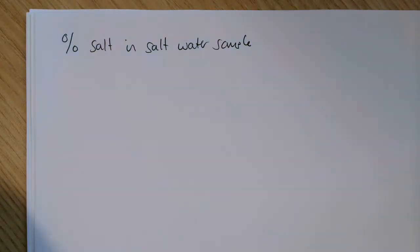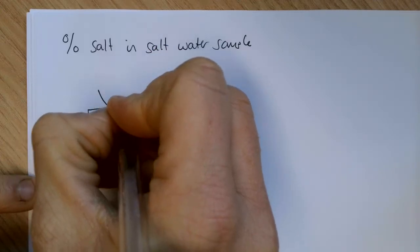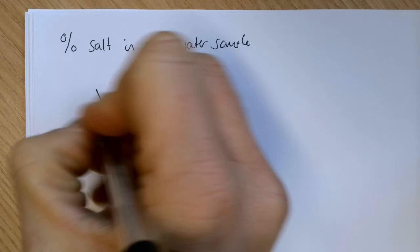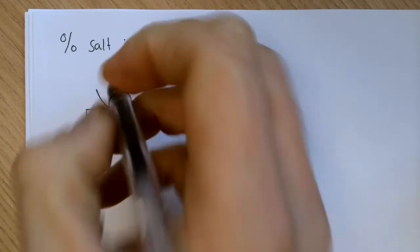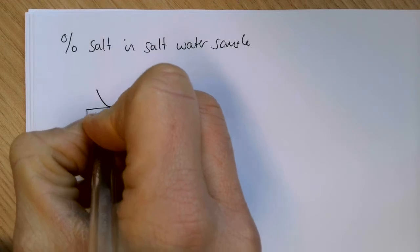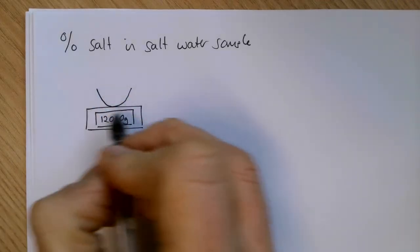The practical method we would carry out would be to take an empty crucible or evaporating dish or evaporating basin, and we would find the mass using a balance. I'm just going to say for argument's sake here we've got 120.08 grams. That is just the mass of the porcelain evaporating basin.